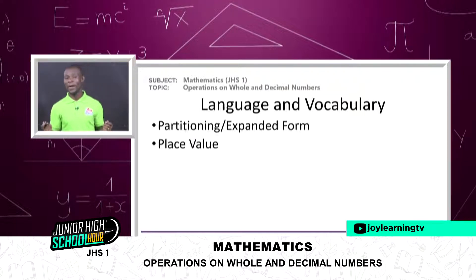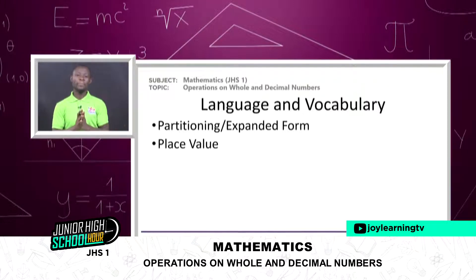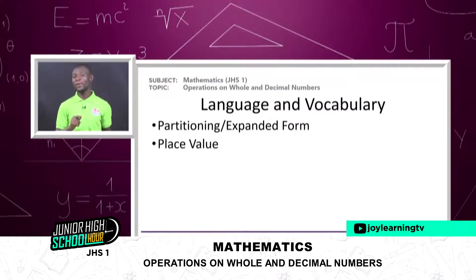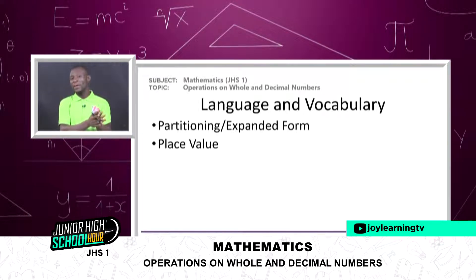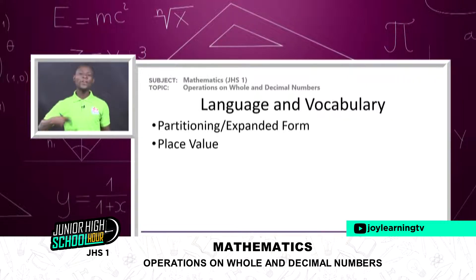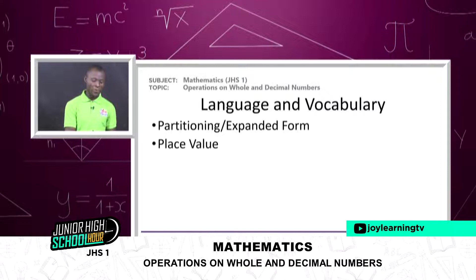The second vocabulary term is place value — the commonly known concept that the value of a digit in any given number depends upon the position or place it is found within the number. For example, if a digit is found in the tens position, it has a value of ten times that digit. So if the digit is five in the tens position, that gives us fifty. The position determines the value of the digit.